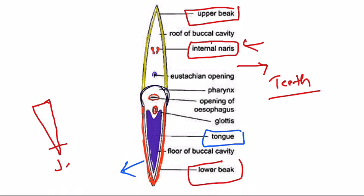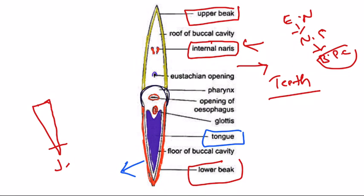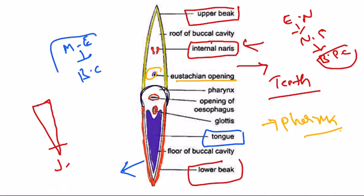On the roof of the buccal cavity, a pair of internal nostrils are present. In respiration, external nostrils open into the nasal sacs, and nasal sacs open by these internal nostrils into the buccal cavity. The buccal cavity opens into the next part called the pharynx. On the roof of the pharynx, the Eustachian tube opens, connecting the middle ear to the buccal cavity. On the floor of the pharynx, the glottis is present.